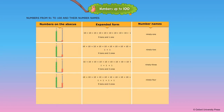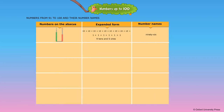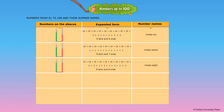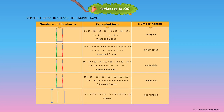9 tens and 4 ones — the number name is written as 94. 9 tens and 5 ones — the number name is written as 95. 9 tens and 6 ones — the number name is written as 96. 9 tens and 7 ones — the number name is written as 97. 9 tens and 8 ones — the number name is written as 98. 9 tens and 9 ones — the number name is written as 99. 10 tens — the number name is written as 100.